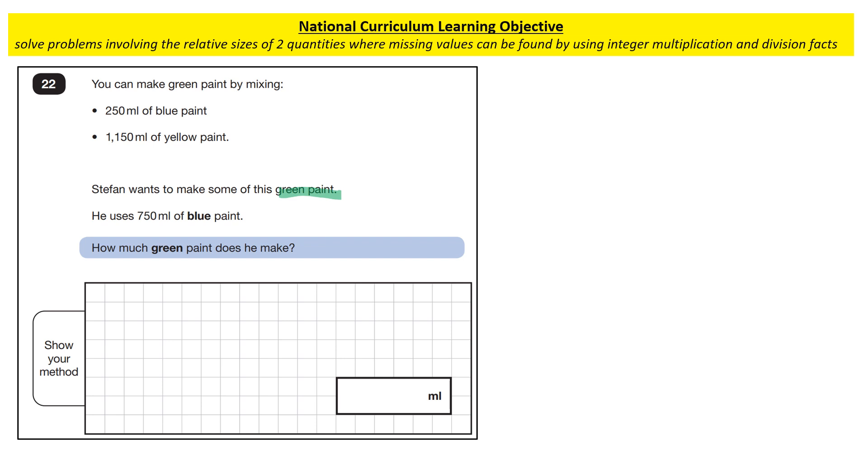You can make green paint by mixing 250 milliliters of blue paint and 1,150 milliliters of yellow paint. Important to note here, green paint can be made from blue and yellow, and if you change the quantity of the blue or the yellow, you're going to get a different shade of green. Ratio is used in real life for this very thing, for paint. If you were to paint a room a new color, you might want to go and get a tester pot before you chose your paint. It's really important that the manufacturers can make the tester pot exactly the same shade as the larger pots of paint, and that's where ratio is used. In this particular example, we've got our specific quantities of blue and yellow to make that shade of green.